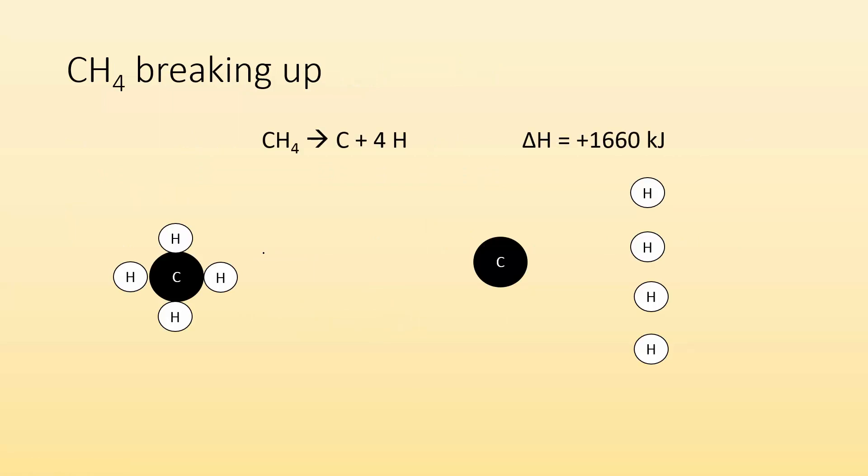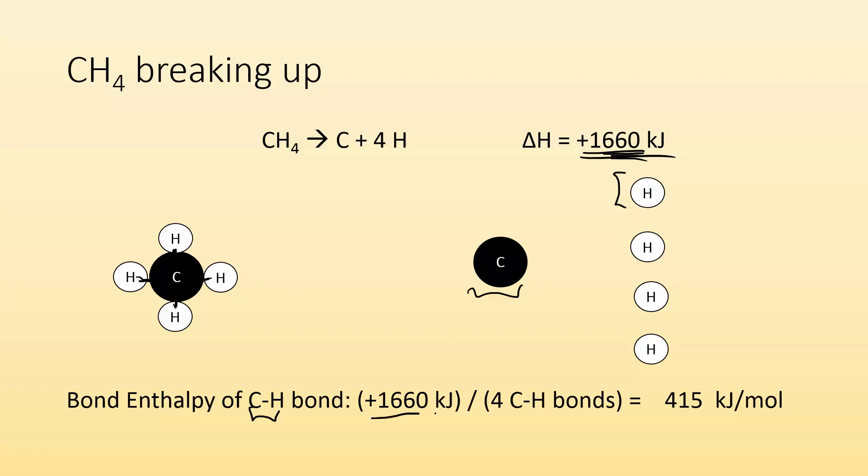Alright, CH4 breaking up. Let's talk about an example. If I'm talking about breaking CH4, which is just one carbon bonded to these four hydrogens, and I wanted to break them apart so that I get carbon all by itself and all these hydrogens by themselves, I have to put in 1660 kilojoules. So to break those four bonds, that's how much energy I've got to put in. So if I'm talking about bond enthalpy for just one of those bonds, this carbon hydrogen bond, I take the total energy that it took to break four of those bonds, divide it by four, and it tells me that the bond enthalpy for carbon hydrogen bond is 415 kilojoules per mole.